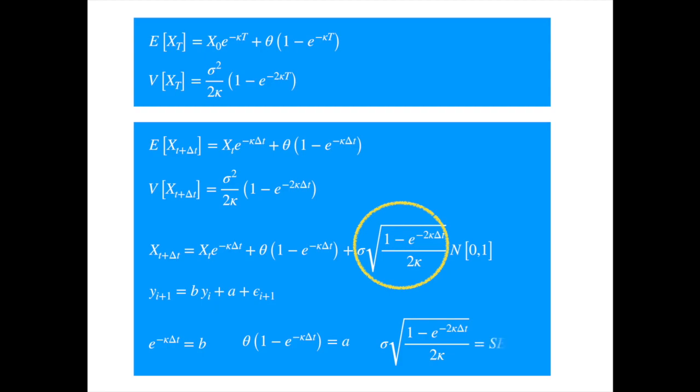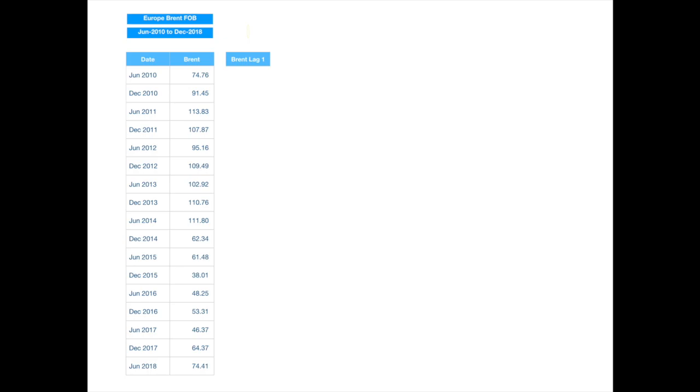As in the previous two videos, we will now try to get some feel for the Ornstein-Uhlenbeck process by using it to model real financial data. We will use Brent data with semi-annual frequency. Now, we saw that the Ornstein-Uhlenbeck process is a continuous time analogue of AR(1) process, so we will regress the Brent price against its own lag values. First, let's generate the lag series. It is simply the previous value of the series. We repeat the calculations for the full history.